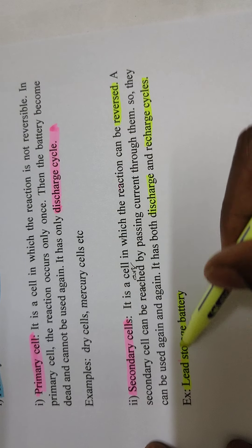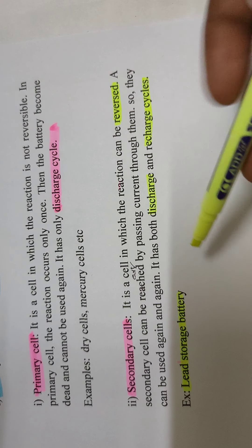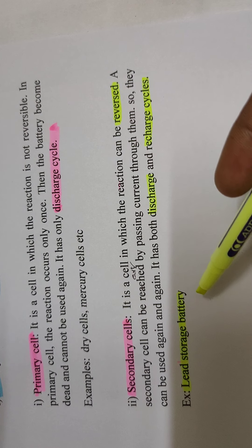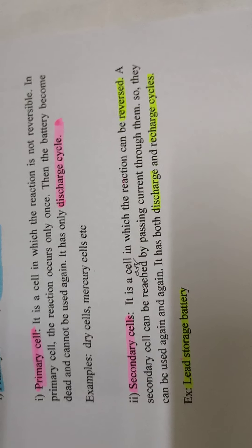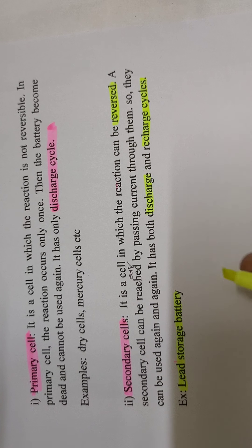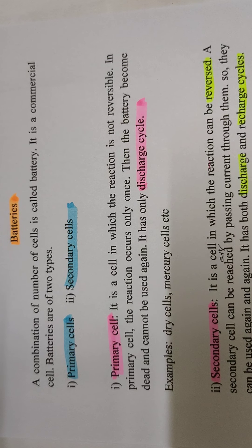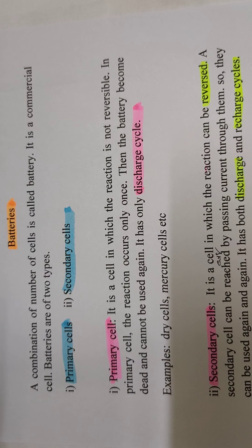There are many secondary cells such as lead storage batteries and lithium-ion cells. Lead storage battery is a familiar example used in our homes for domestic purposes. Dry cells are examples of primary cells. So, a battery is a combination of several cells, and batteries are mainly classified into two types: primary cells and secondary cells. Thank you students for watching.